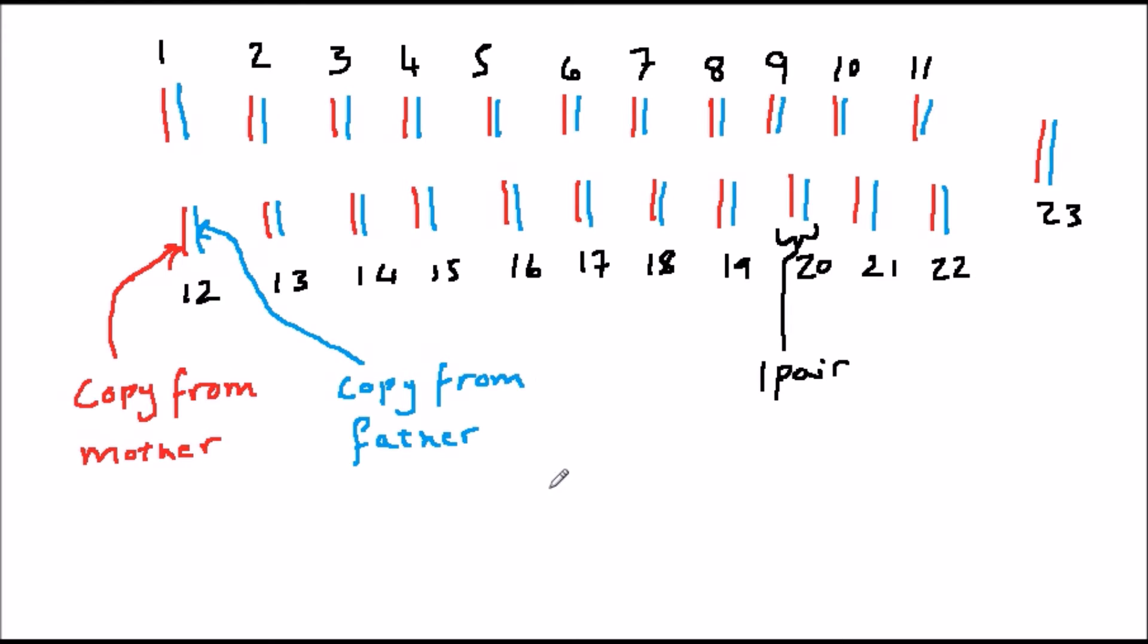The two chromosomes which make up each pair are duplicates. They have the same genes. However, it's very likely that the code in these genes is slightly different between the copy that you have from your mother and the copy you have from your father. This is because of mutation, which I'll explain later.